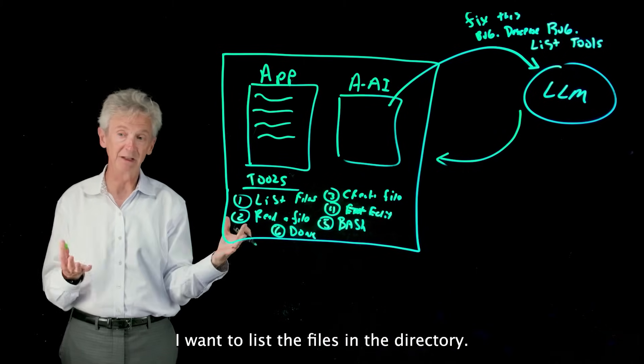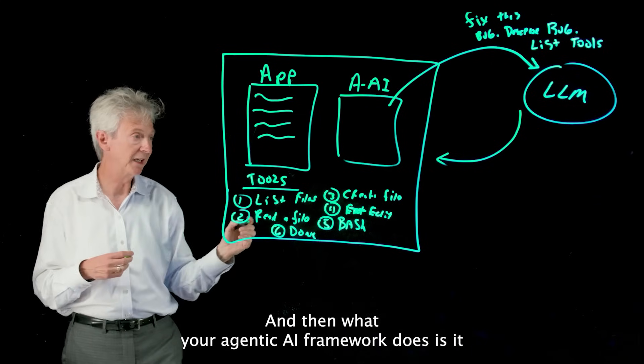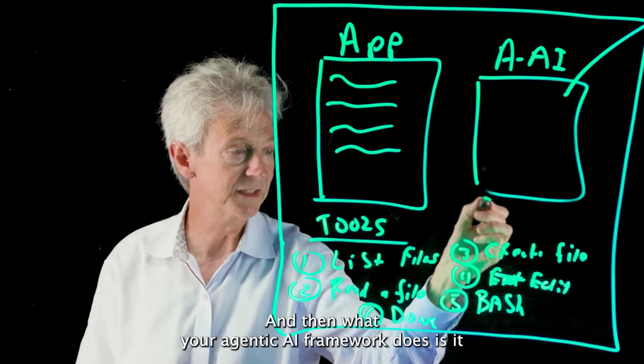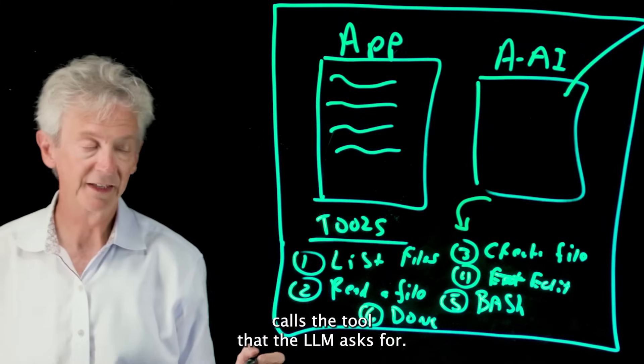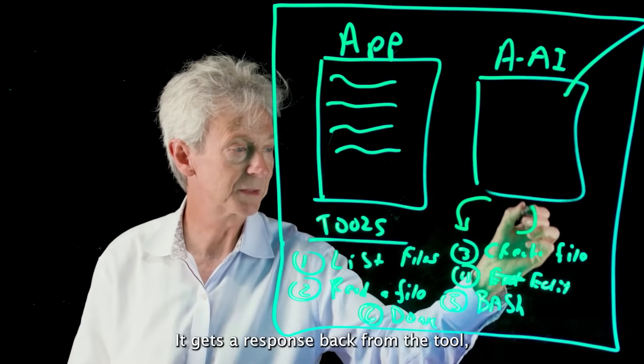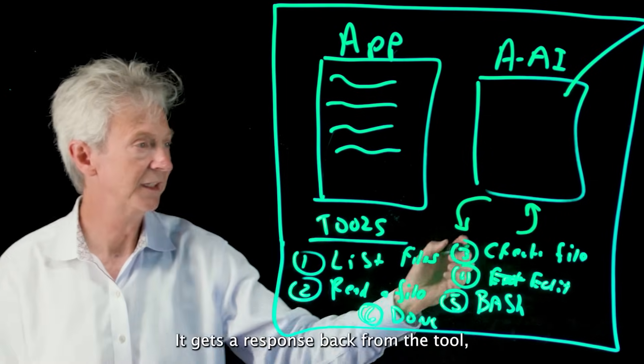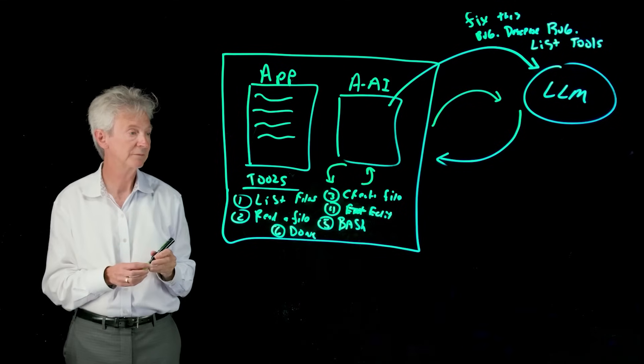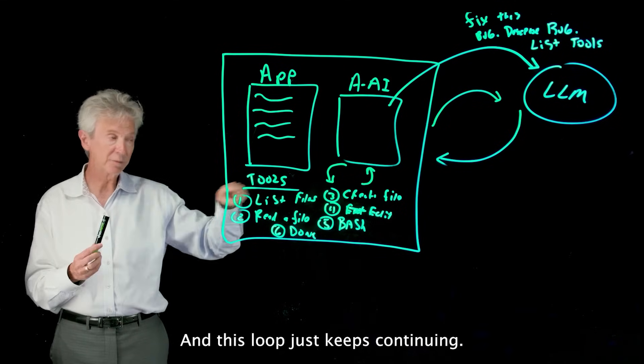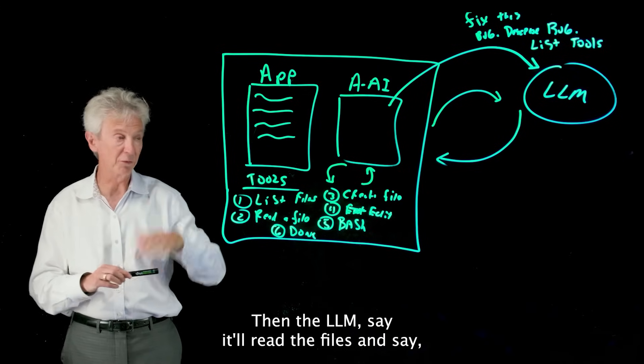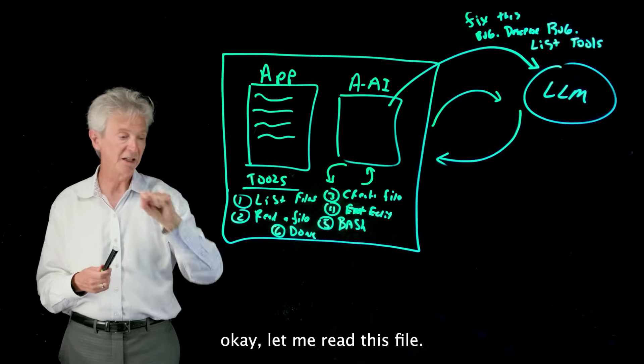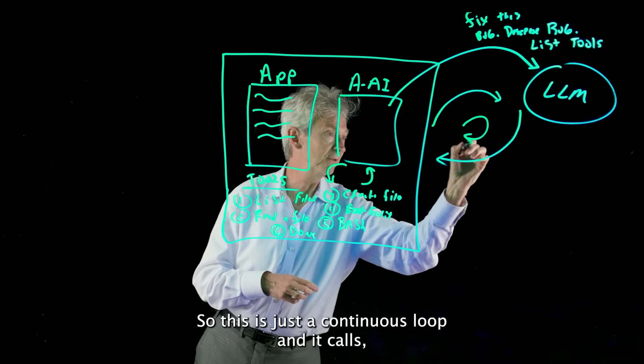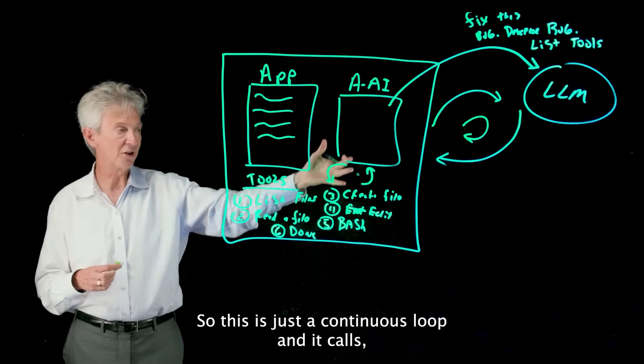And then what your agentic AI framework does is it calls the tool that the LLM asked for, it gets a response back from the tool, and then it sends that response back to the LLM. And this loop just keeps continuing. Then the LLM will say let me read this file.